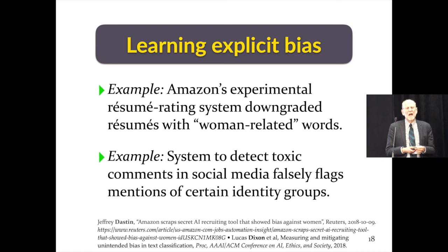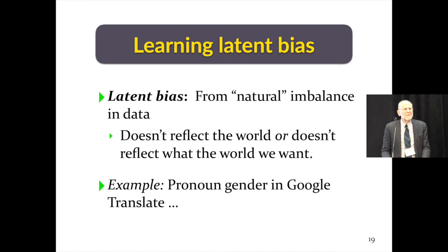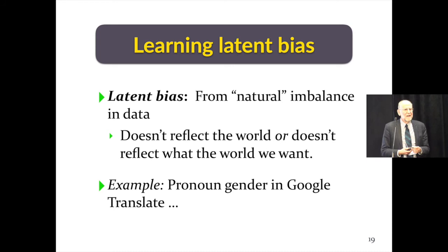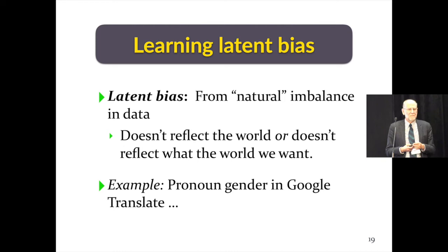But more usually, that's not how it happens. More usually, the bias that's learnt by these systems is latent, in the sense that it comes from what we might call a natural imbalance in the data — that is, the data we have either doesn't reflect the world, or it does but doesn't reflect the world as we'd like it to be. And very often we're training these systems exactly because we want to avoid this bias in the first place.